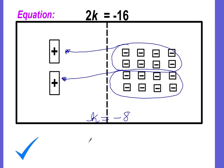Now you always want to go check because it's so easy to be going through really fast and to make a mistake. So if I take 2 and I replace k with negative 8, 2 times negative 8, does that equal negative 16? Well, 2 times negative 8 is negative 16, so it sure does.